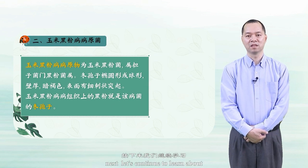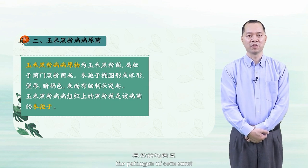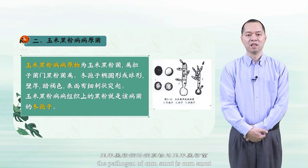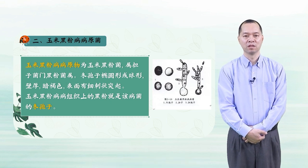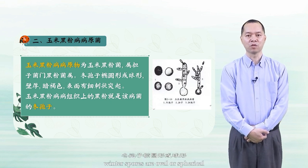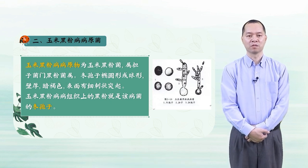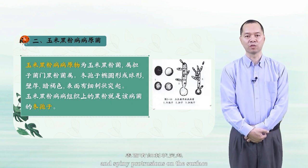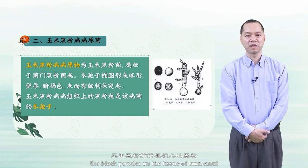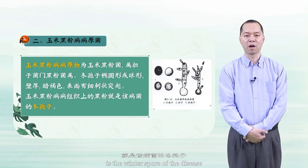Next, let's continue to learn about the pathogen of corn smut. The pathogen of corn smut belongs to Basidiomycota. Winter spores are oval or spherical with thick dark brown walls and spiny protrusions on the surface. The black powder in the tissue of corn smut consists of the winter spores of the disease.